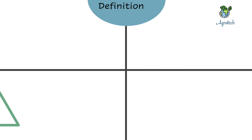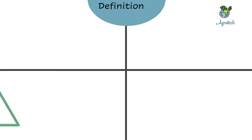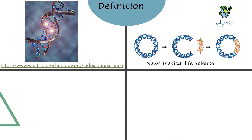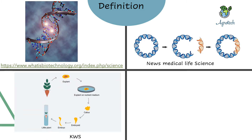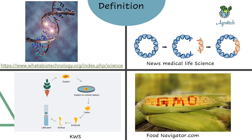The definition of plant biotechnology is actually very similar to the definition of biotechnology overall. Plant biotechnology is a set of techniques — such as gene editing, gene modification, cloning, transformation, tissue culture, or any other set of techniques — that help to adapt plants with a specific need or purpose. This is what plant biotechnology is.